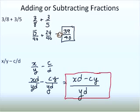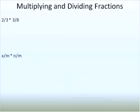With numbers, we always simplify if we can. In that problem we didn't have any common factors, so I didn't simplify further, but you will see where we can do that in the next problem. Let's look at multiplying first and then dividing: 2 thirds times 3 eighths.